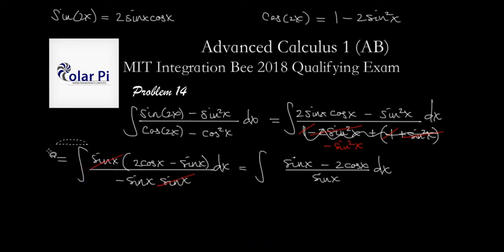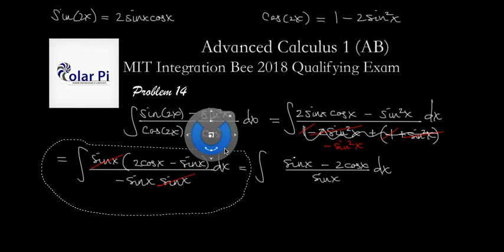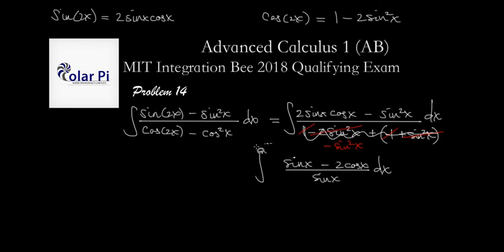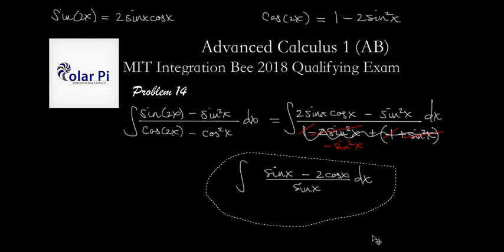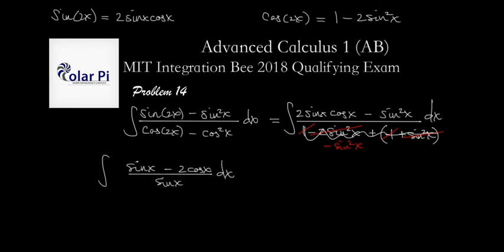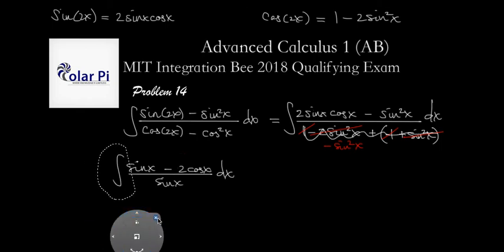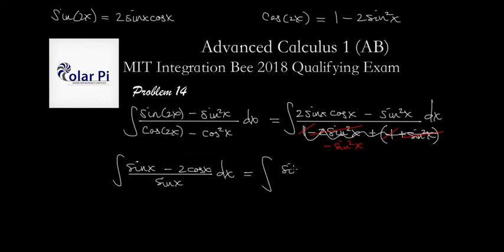And then next, we can do the following. This, in turn, equals sine x divided by sine x, and then minus 2 times cosine x divided by sine x, and then of course dx.